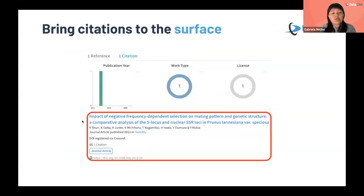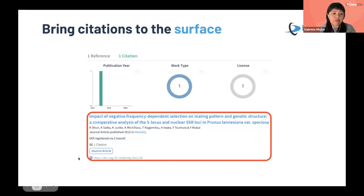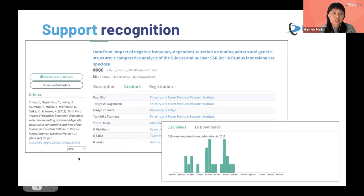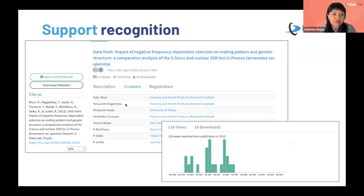It's possible among the other information to see if that item — in this case, the dataset — has been cited. This item has one citation and you can see it's a journal article along with the identifier of that article. This infrastructure enables recognition for creators and researchers. You can see the full list of creators who contributed to that item and their affiliations.